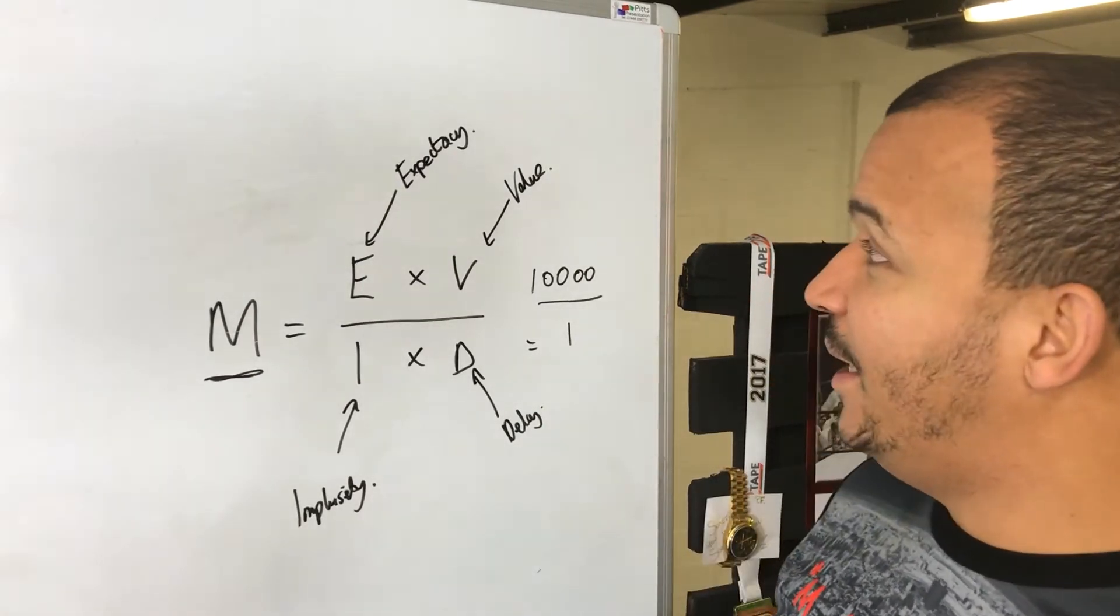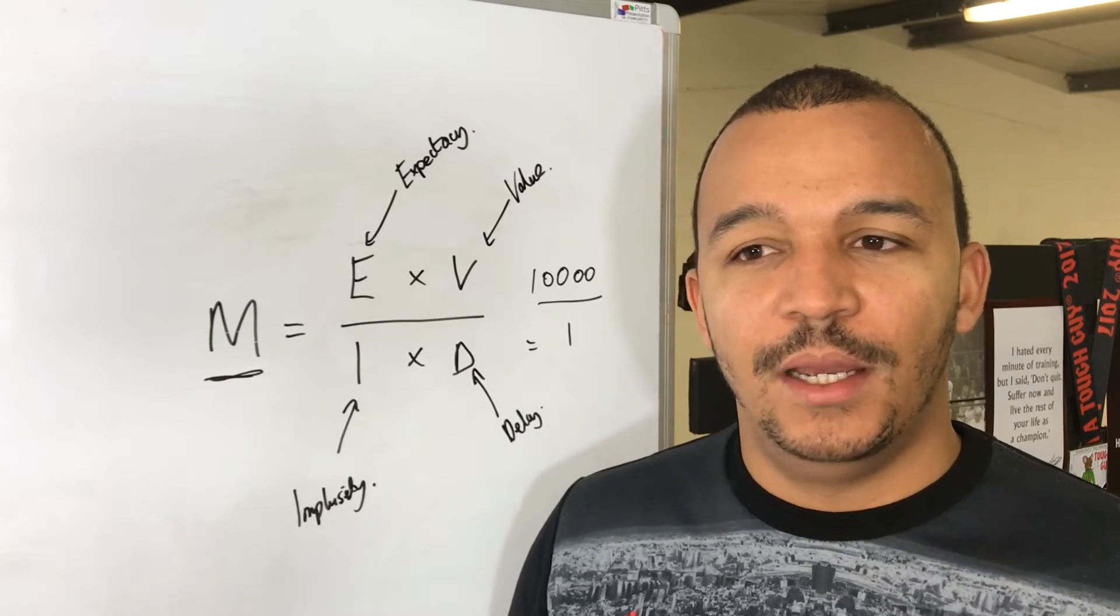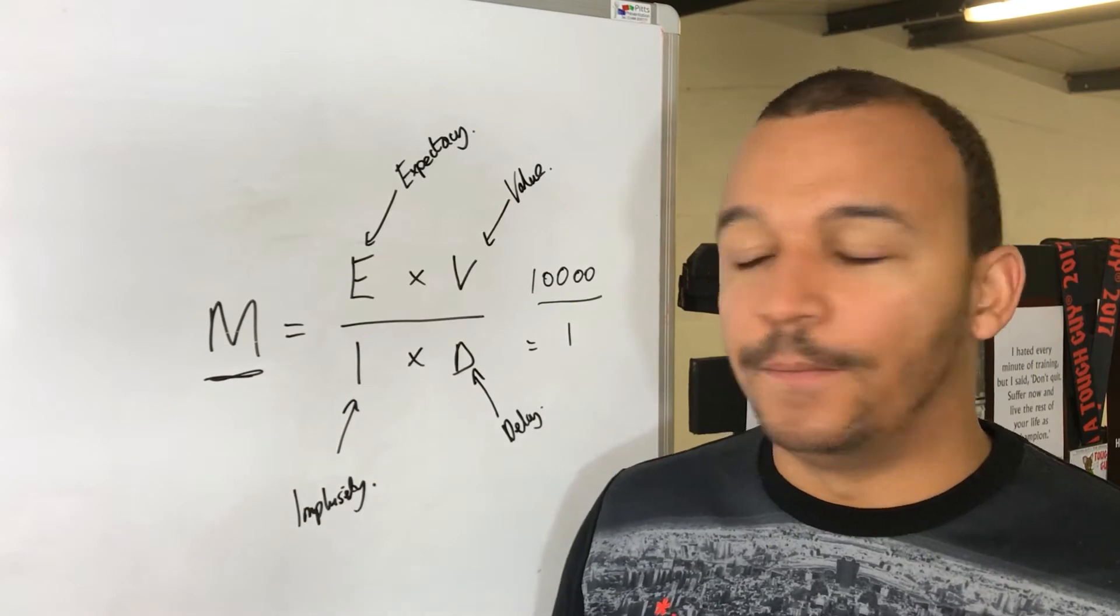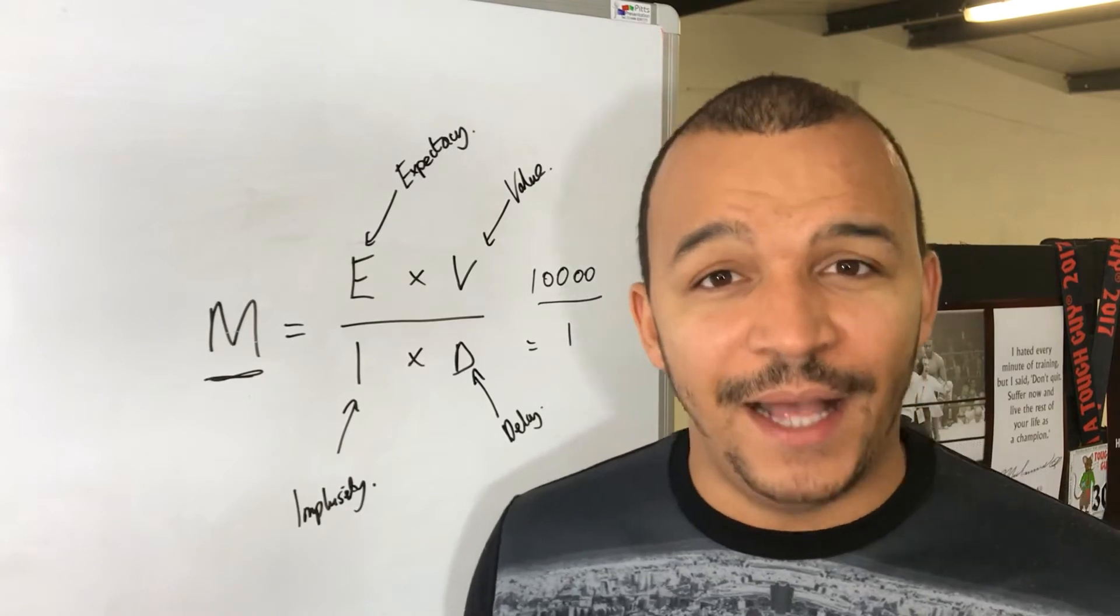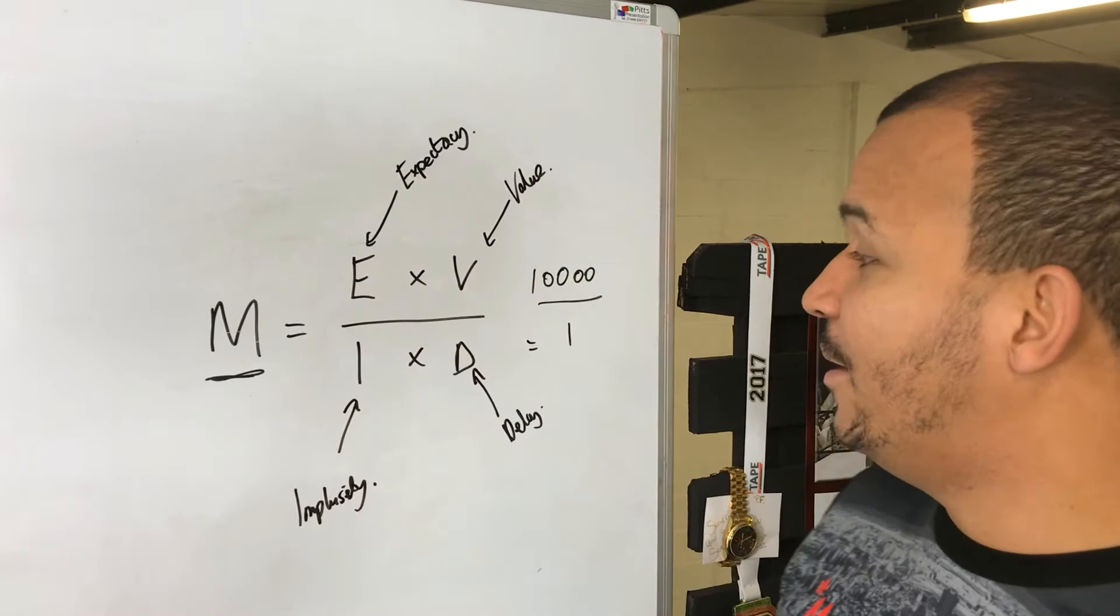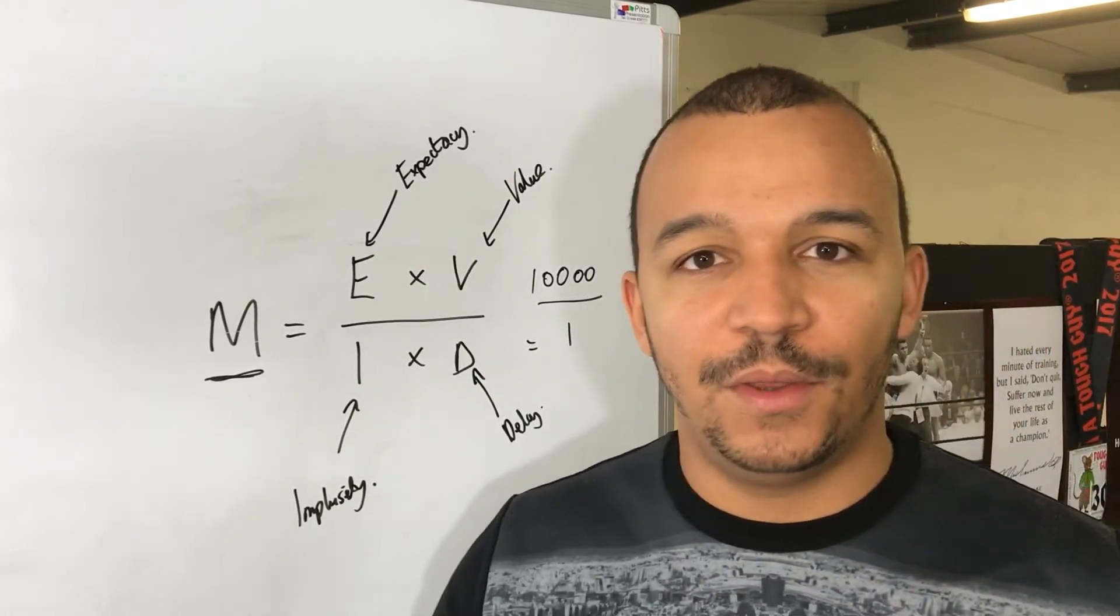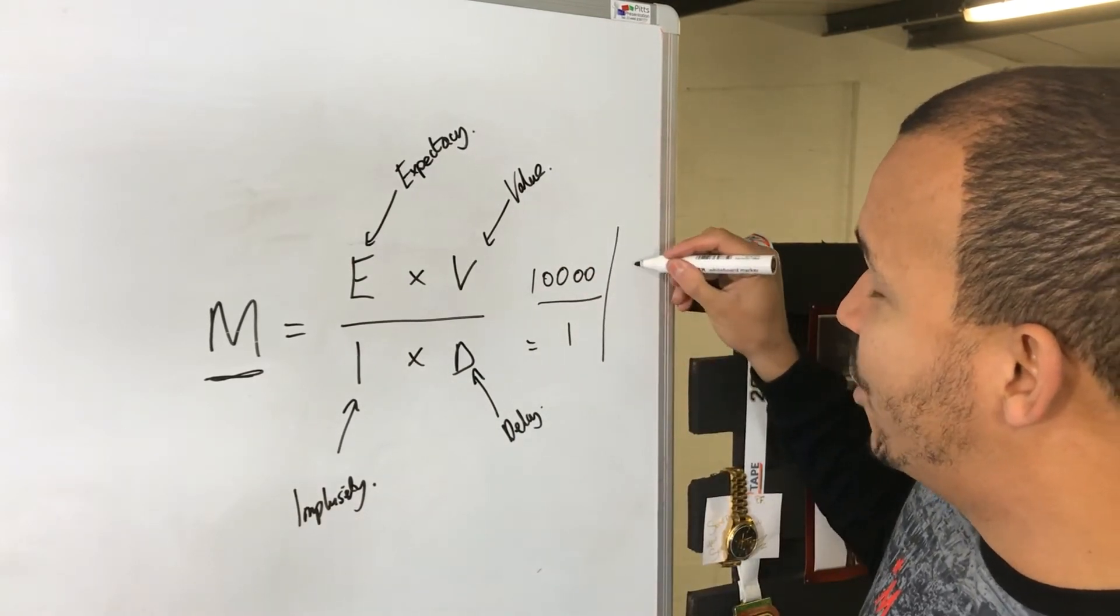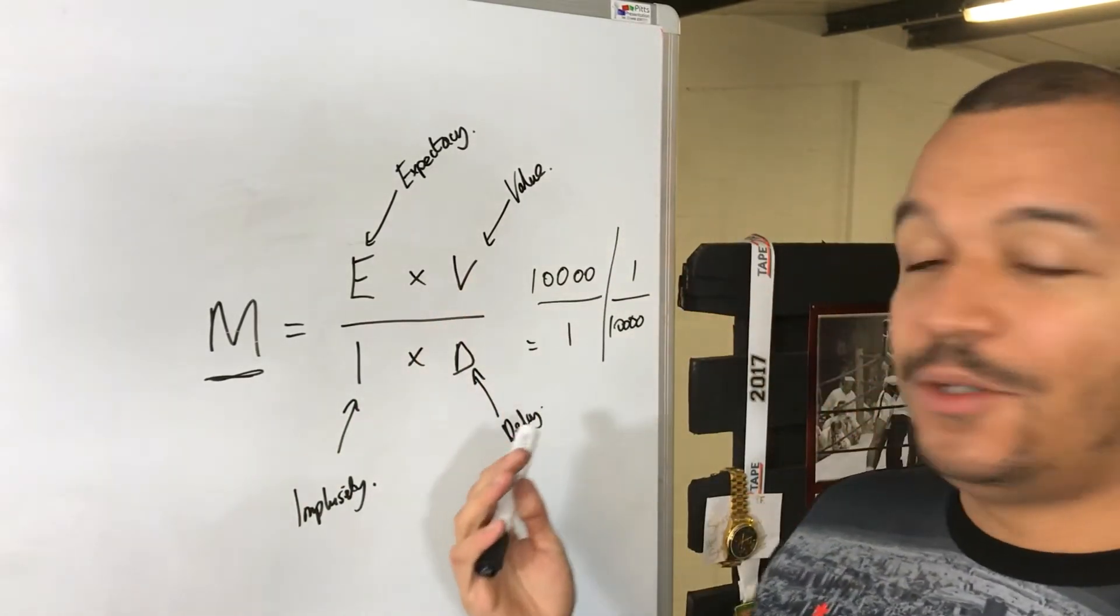At the same time, let's say your expectancy, let's say you're going into a business model and you don't have much confidence in your own ability, that's bringing your expectancy right down. If the value means nothing to you, if it's nothing of value to you, it's not going to change your life, you're not bothered about it, it's going to bring it right down. If you're always getting distracted from one thing to another, that's going to bring this number, this number's going to go in the other side, motivation right down.